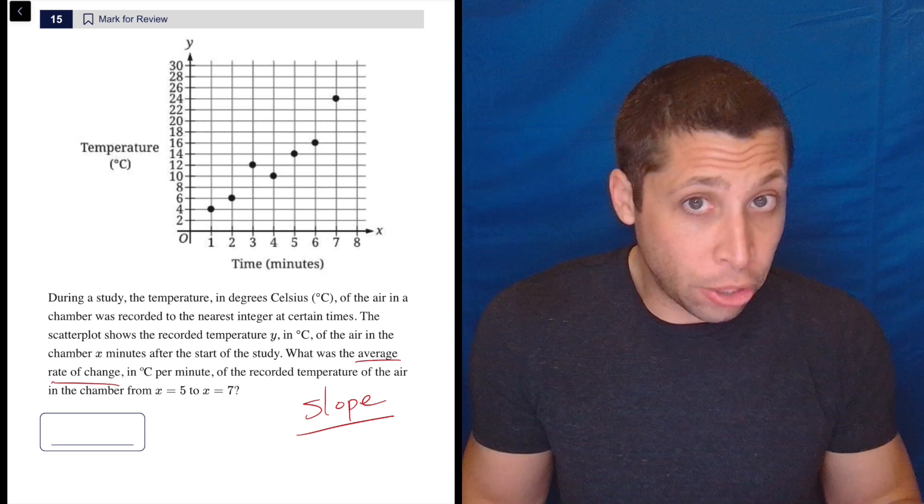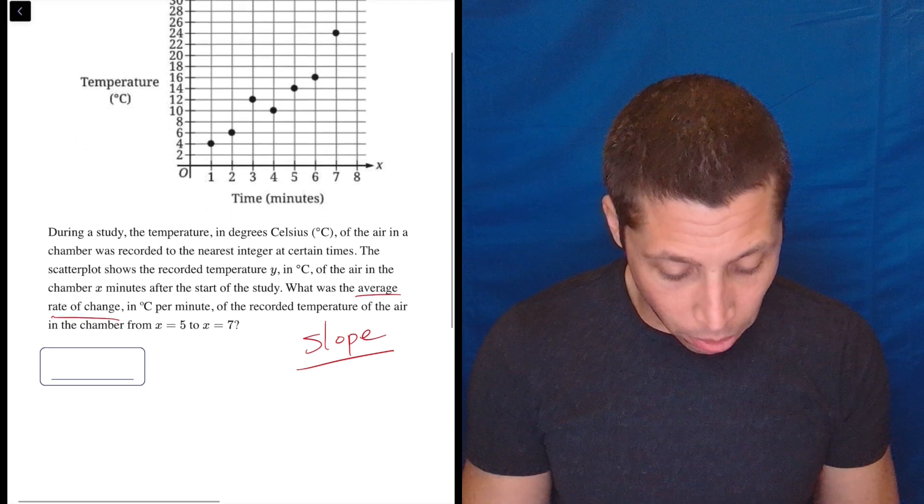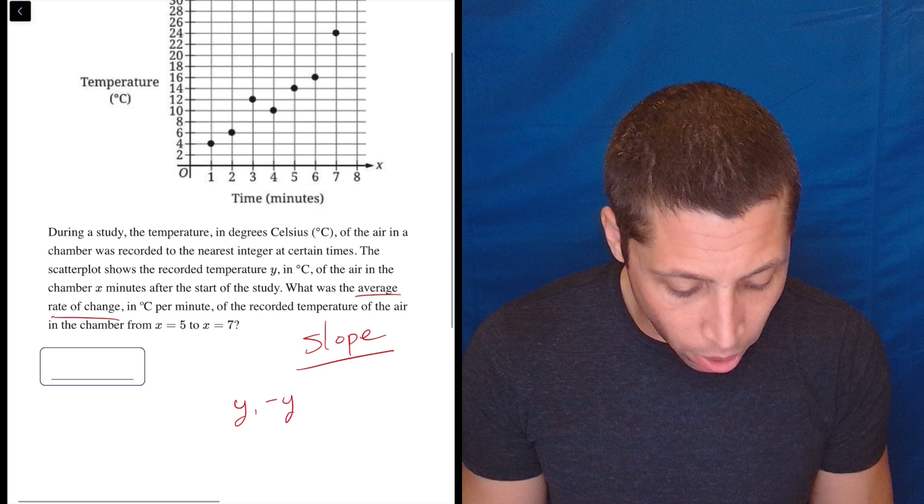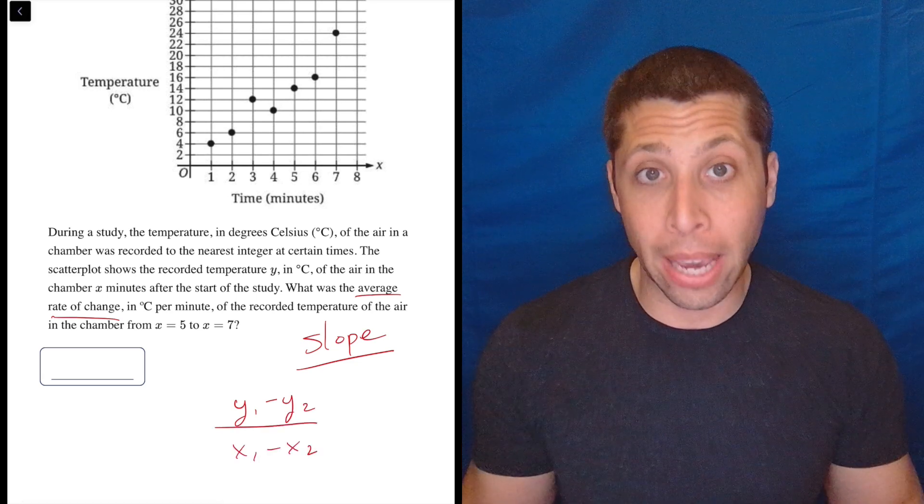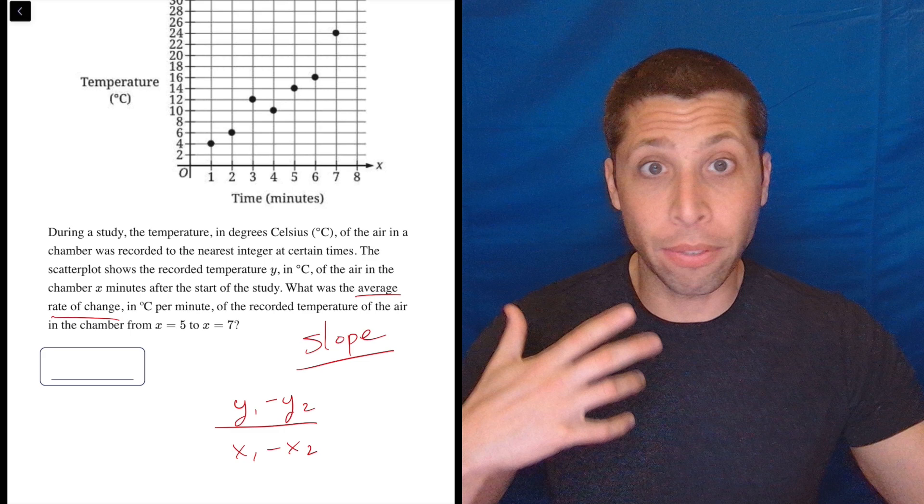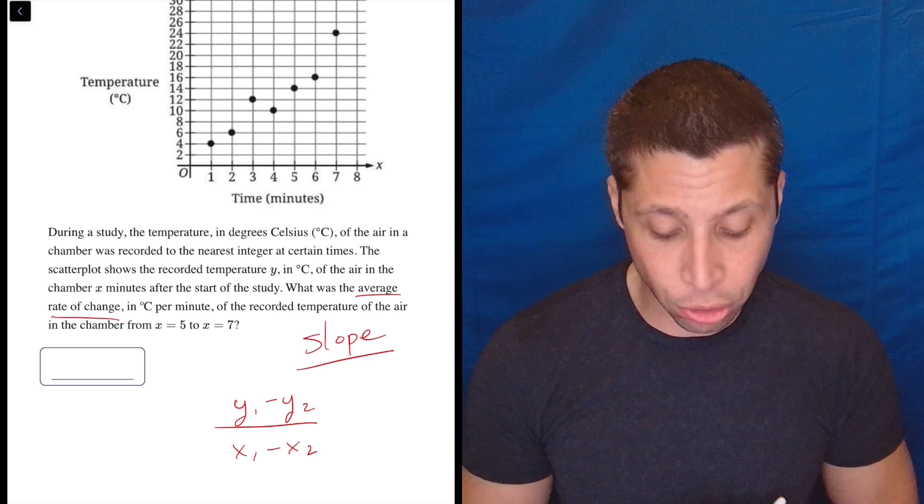Now, there are things I would check for. Is it still the normal slope formula where we do y1 minus y2 over x1 minus x2, or are they flipping it? I could definitely see the SAT flipping things around for no real reason other than to see if you're paying attention.